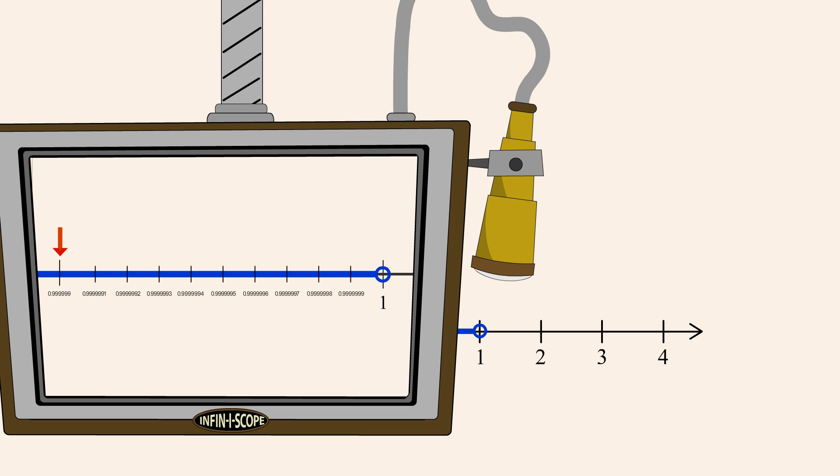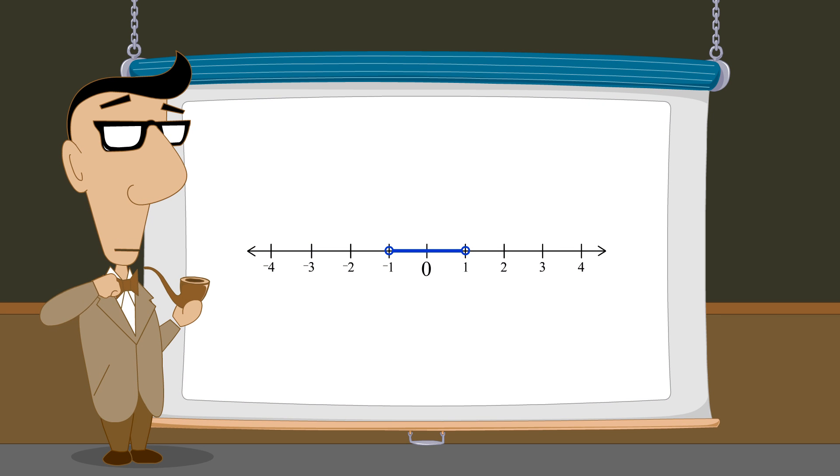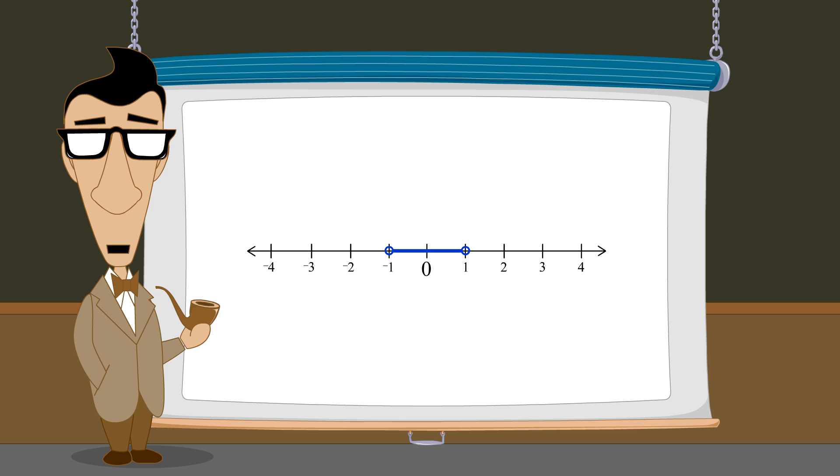No matter which number we pick, there will always be a number closer to 1. The fact is that there is no maximum number in an open interval. This same logic explains why it is also impossible to find a minimum number in an open interval.